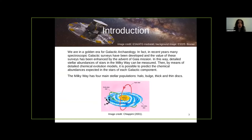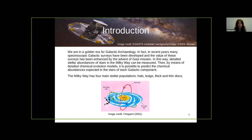We are really in a golden era for galactic archaeology, thanks to the advent of large spectroscopic galactic surveys such as APOGEE and Gaia, and in this way the detailed stellar abundances of stars in the Milky Way can be measured. By means of detailed chemical evolution models, it is also possible to predict the chemical abundances expected in stars of each galactic component. The Milky Way has four main stellar populations that differ on the basis of chemical and kinematical criteria: halo stars, bulge stars, and thick and thin disk stars. In my talk, I will mainly focus on the thick and thin disk chemical evolution.